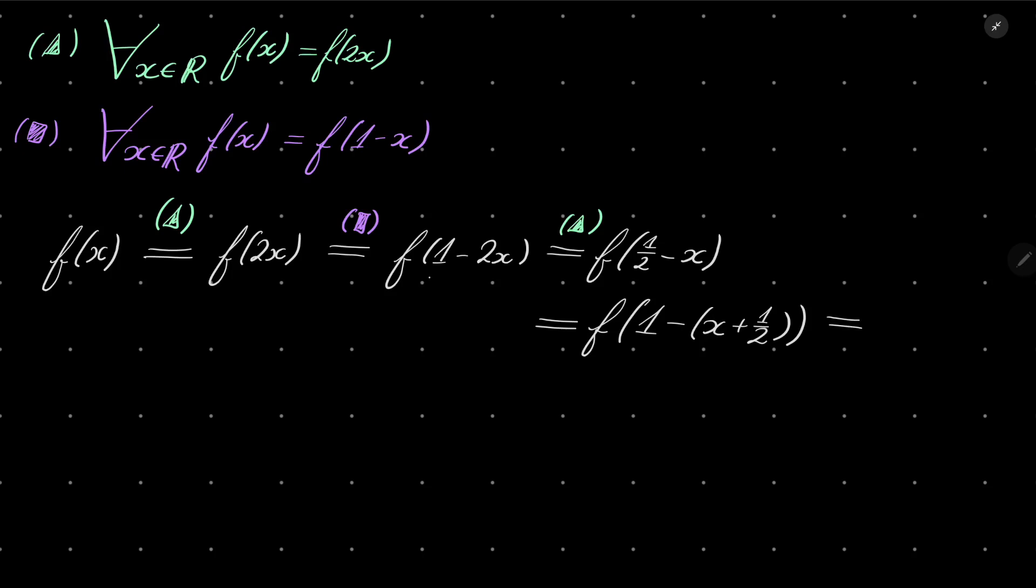And finally, it's just the same as f(x + 1/2) by using once again, last time, condition square.